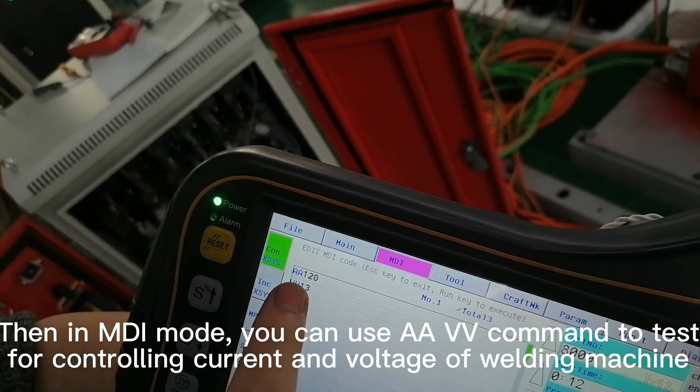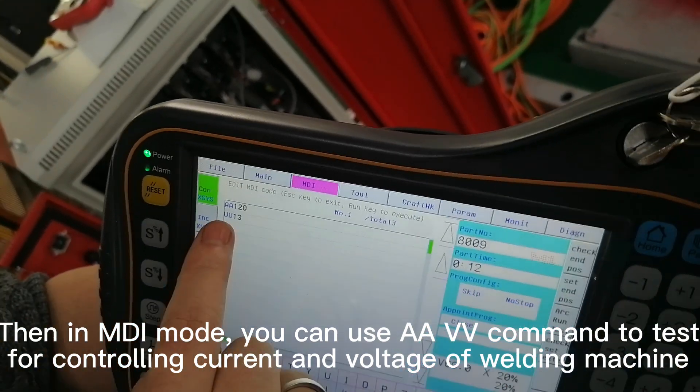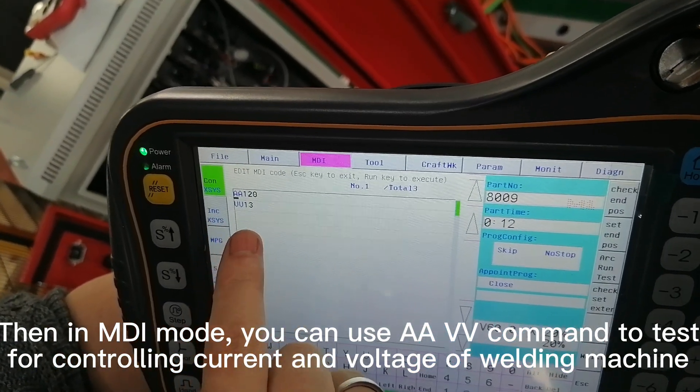Then in MDI mode, you can use a AVV command to test for controlling current and voltage of welding machine.